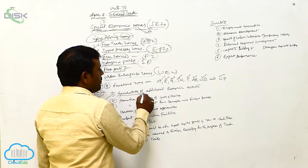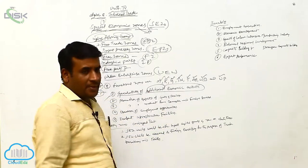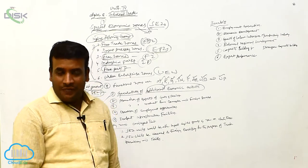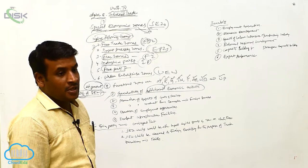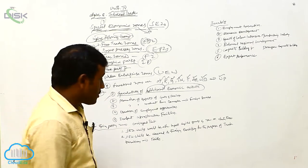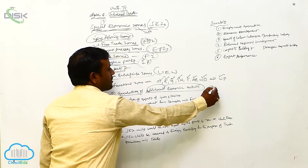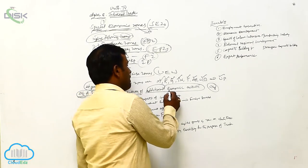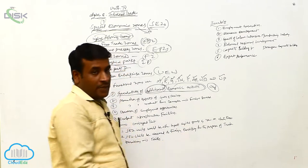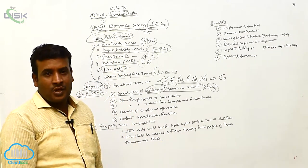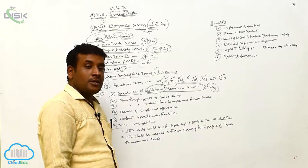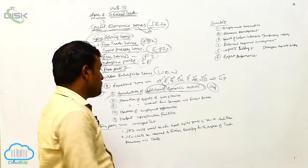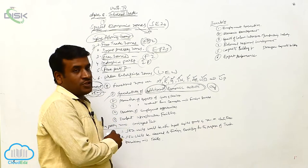The objectives of SEZ — why these zones are established. First: generation of additional economic activity. For additional economic activities, we need to establish encouragement. Without encouragement, economic activities won't grow. For that additional economic activity purpose, we are ready to establish new organizations. We have special zones where you can establish your organizations, and then automatically economic activities will be additionally improved. That is the first objective.